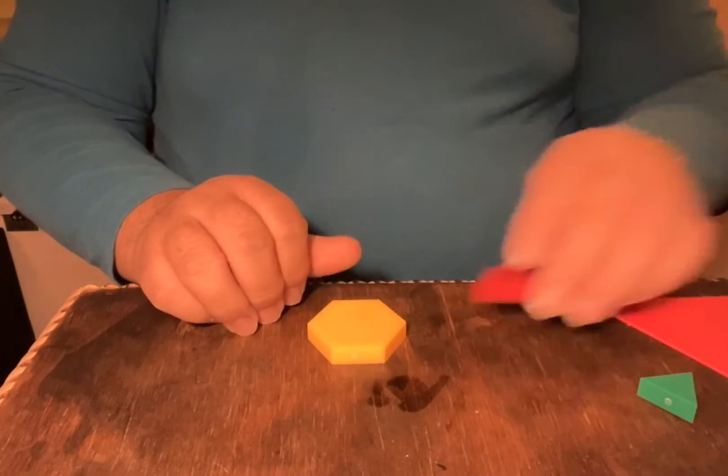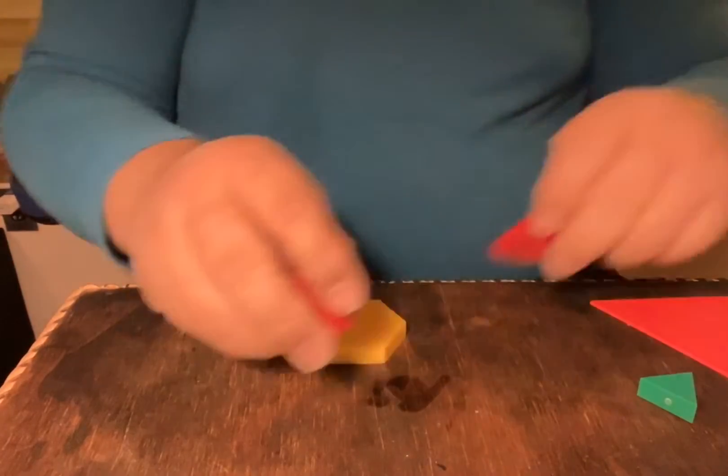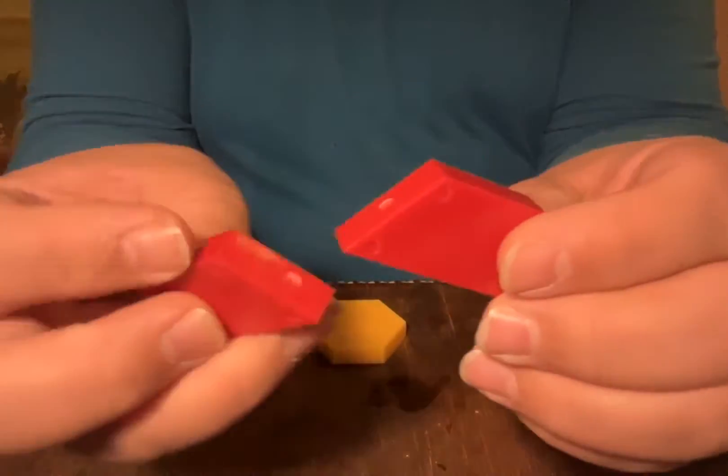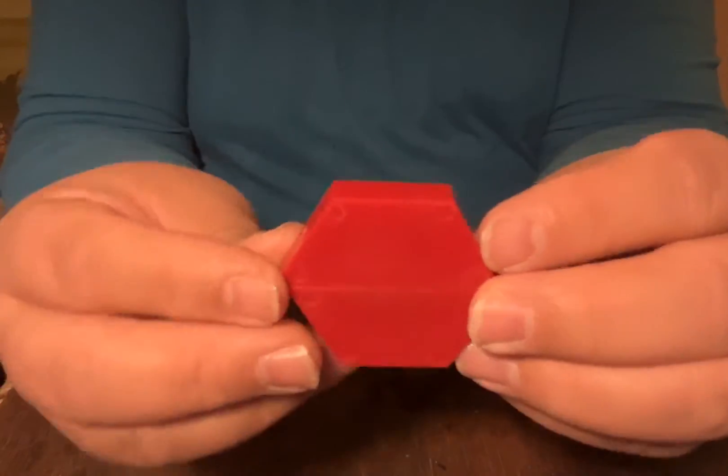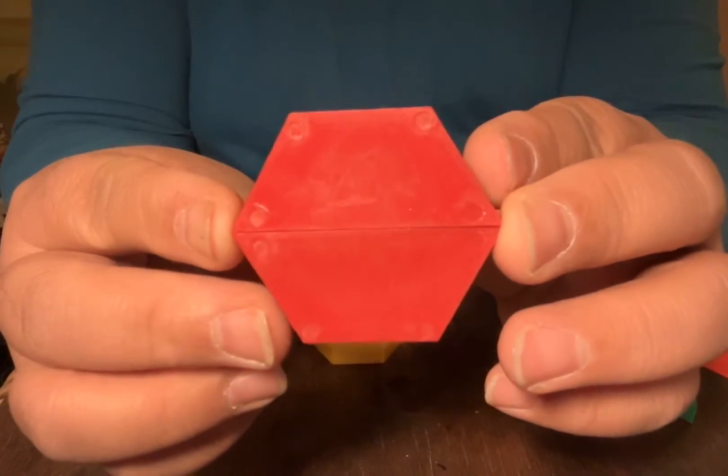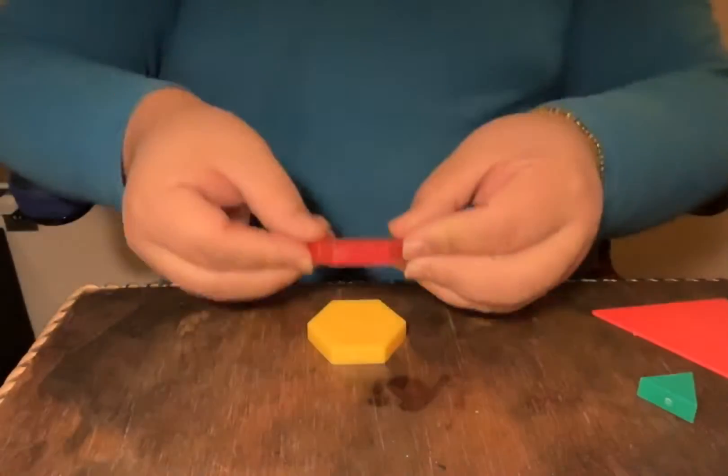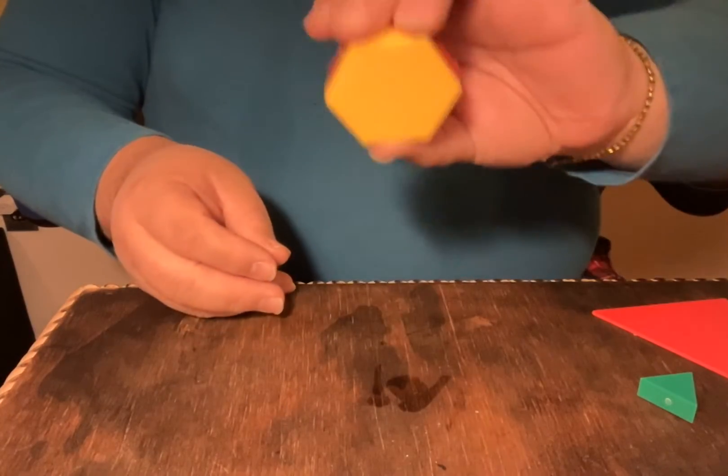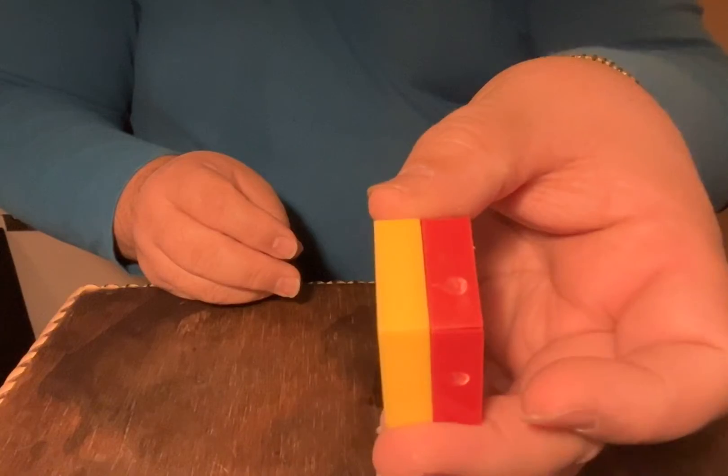So here we have a hexagon, and we are going to use two trapezoids. The two trapezoids, if you put them together in opposite placement like this, it turns into a hexagon. And if you put it on the yellow hexagon, it makes a perfect match.